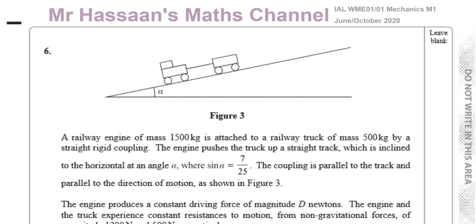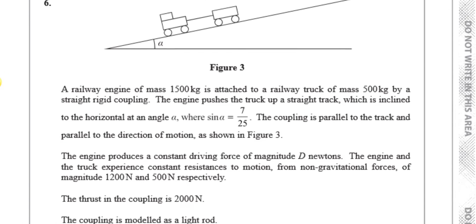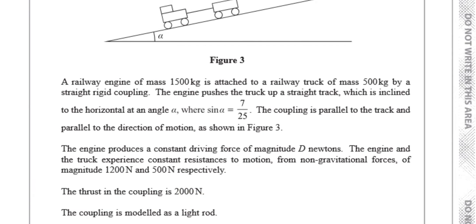Question number six is about connected particles. It says a railway engine of mass 1,500 kilograms is attached to a railway truck of mass 500 kilograms by a straight rigid coupling. The engine pushes the truck up the track, which is inclined to the horizontal at angle alpha, where sine alpha equals 7 over 25. The coupling is parallel to the track. The engine produces a constant driving force of magnitude D newtons. The engine and the truck experience constant resistances to motion from non-gravitational forces of magnitude 1,200 newtons and 500 newtons respectively. The thrust in the coupling is 2,000 newtons, and the coupling is modelled as a light rod.